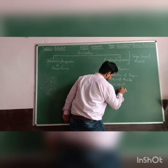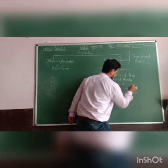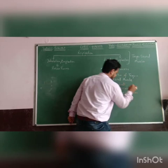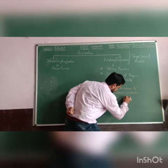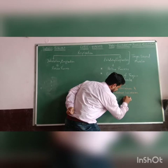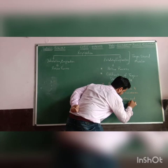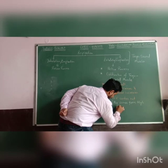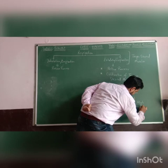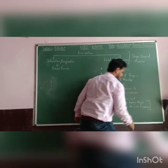Volume decreases and pressure increases. As the pressure increases and volume decreases, the air which is present inside the body of the cockroach comes out — air rushes out. This is because gas or air moves from high pressure to low pressure. This is the expiration process.